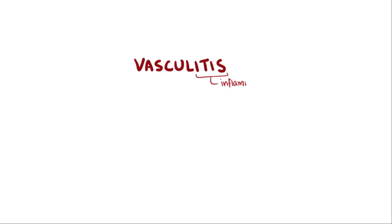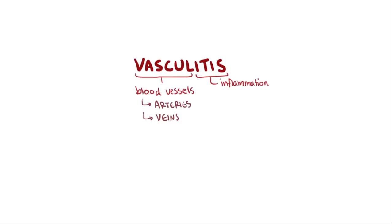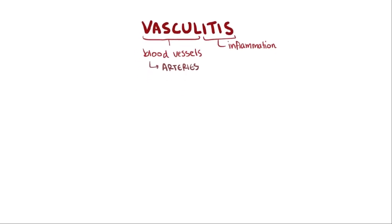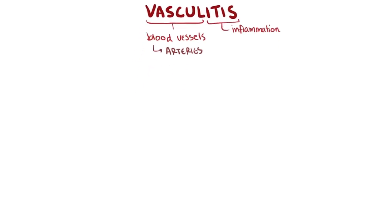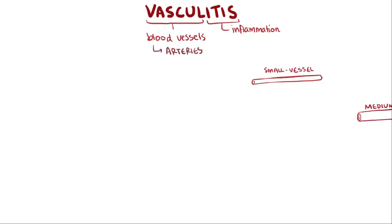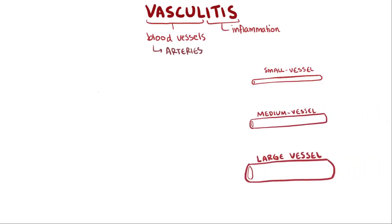With vasculitis, you have inflammation of the blood vessels. Even though this can happen in arteries or veins, we're going to focus on vasculitis in the arteries because it's way more common. Vasculitides — plural for vasculitis — are characterized by the size of the blood vessels they affect, so we have small vessel, medium vessel, and large vessel vasculitis.